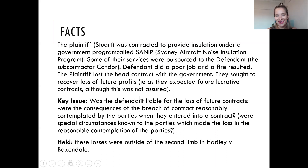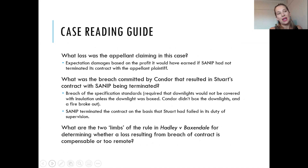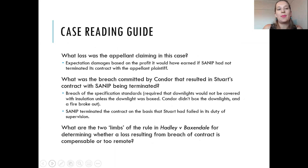There was a raft of reasons given, which we'll deal with in the case reading guide. The first question is: what loss was the appellant claiming in this case? Here they were claiming expectation damages based on the profit it would have earned if SANIP had not terminated its contract with the appellant.